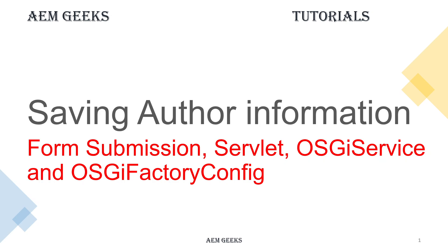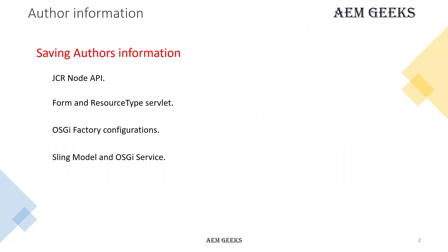In this tutorial, we will see how to save form data or any other information in the repository in the form of a node. We will see how to use JCR node APIs, how to write a resource type servlet, and the factory configuration.